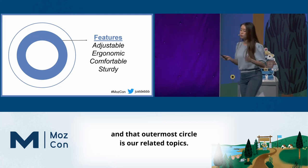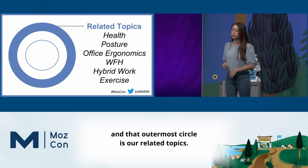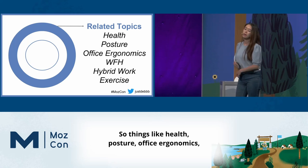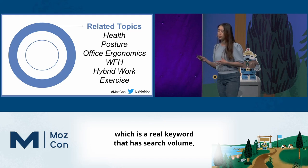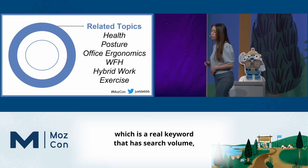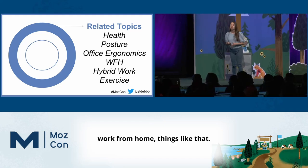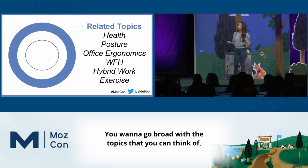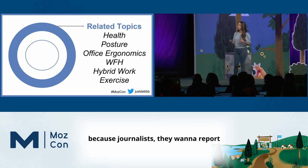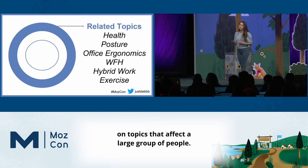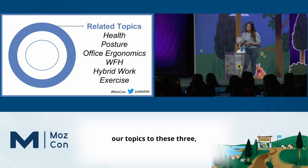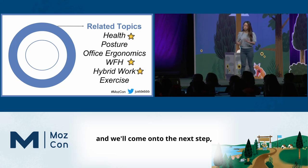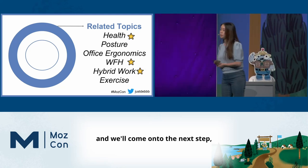These features are going to help us determine what ideas go in that outermost circle, which is our related topics. So things like health, posture, office ergonomics — which is a real keyword that has search volume — work from home, things like that. You want to go broad with the topics that you can think of, because journalists want to report on topics that affect a large group of people. With that in mind, we'll narrow down our topics and move on to the next step, which is to do research.